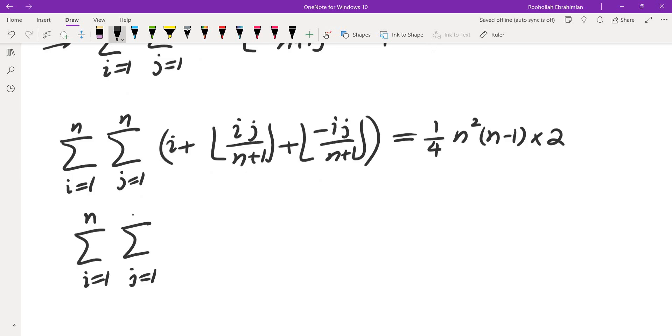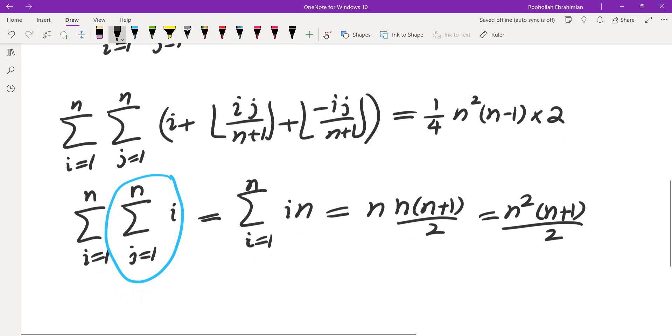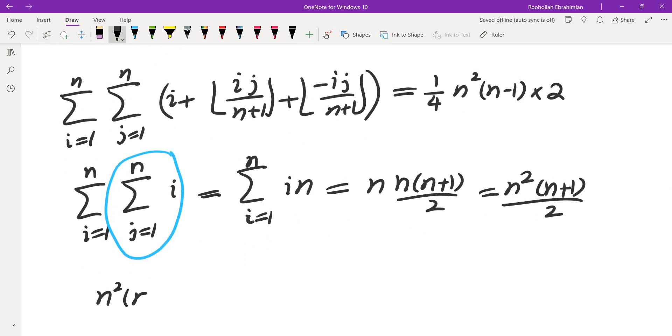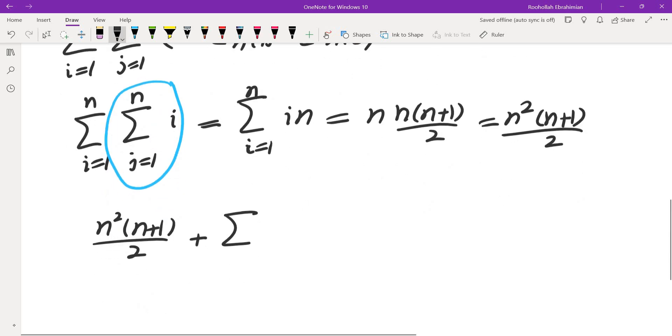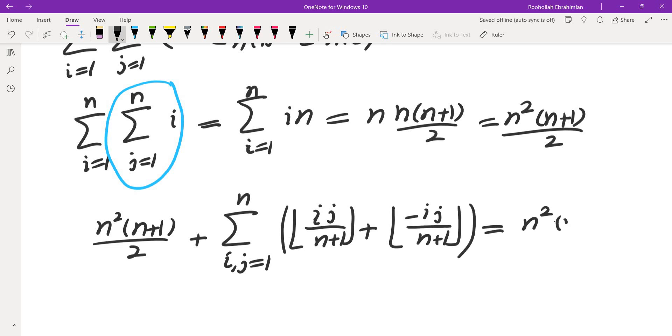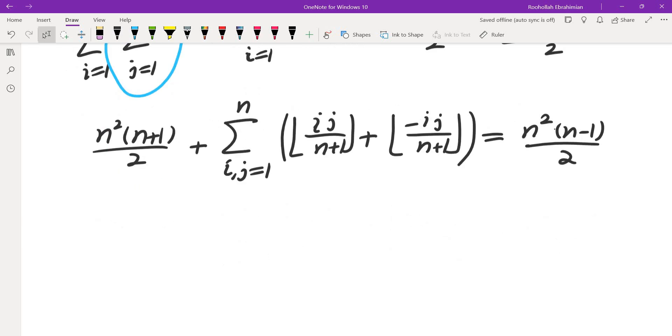If you separate that, you get the sum of i, j equals 1 to n, i equals 1 to n. This is going to be equal to the sum of i times n, because there are n terms in here, and all of them are i. This is going to be n times sum of i, which is n, n plus 1 over 2. So this is n squared, n plus 1 over 2. If I take that and plug it into the top sum, I would get n squared times n plus 1 over 2, plus the sum i and j range from 1 to n, floor of ij over n plus 1, plus floor of negative ij over n plus 1. And this is equal to n squared times n minus 1 over 2.